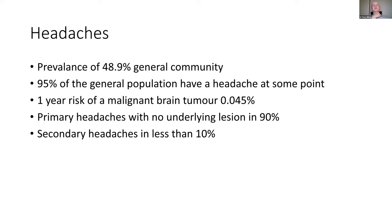I do occasionally see patients who say they're just not a headachy person, and that would be a first concerning point. To put it in perspective, the one-year risk of a malignant brain tumour is 0.045%. A GBM — glioblastoma — happens about five per 100,000 people per year, so relatively uncommon but certainly you don't want to miss it. 90% of the time there won't be an underlying lesion, but sometimes there can be a secondary headache with an underlying cause — that's less than 10% of the time.